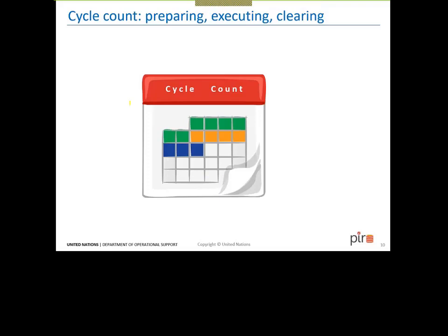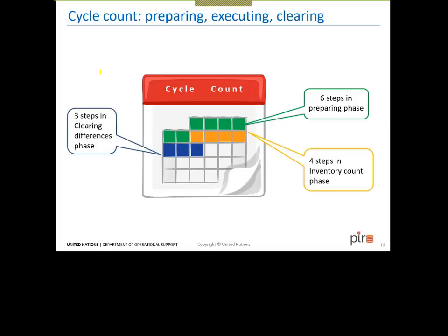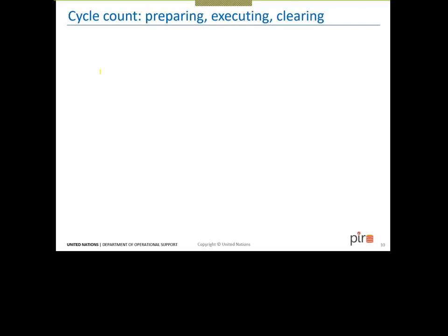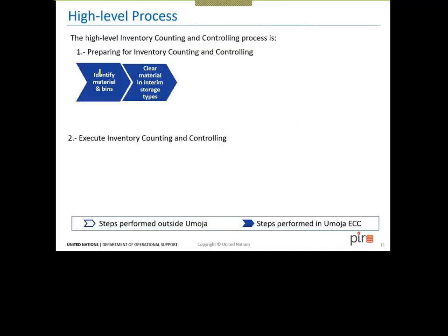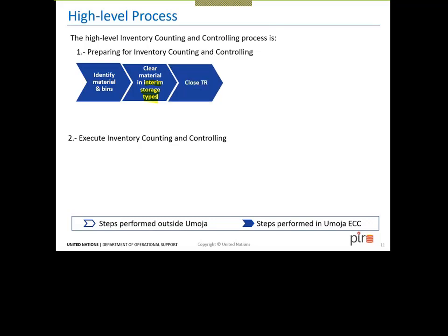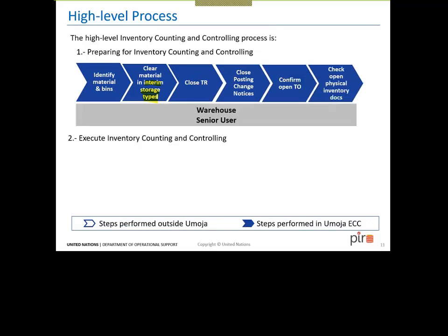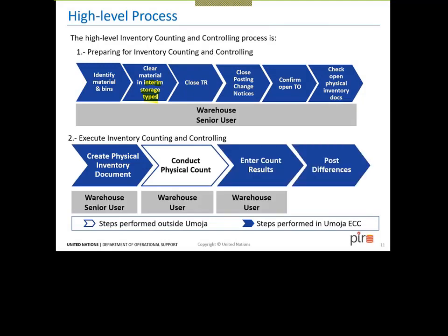Now we're going to talk about the preparation before executing the counting and controlling. There are six steps in the preparing phase, then four in the inventory count, and some extra ones for cleaning differences. The high-level process: first identify the materials and bins, then clear materials in the interim storage types, close TRs by creating TOs, close posting change notices, confirm TOs, and then go to the counting and controlling process.